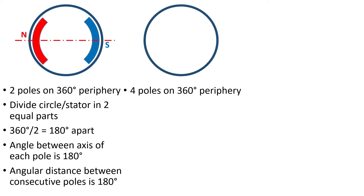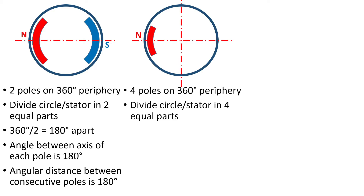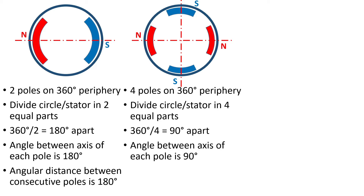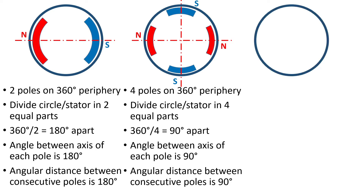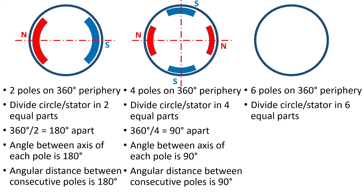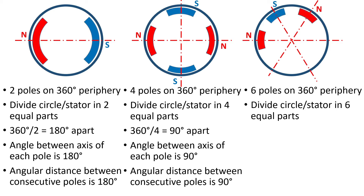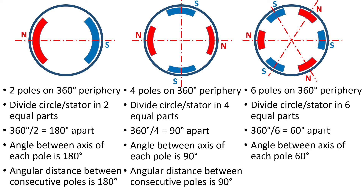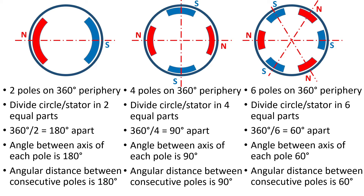If we want to build a machine with four poles, we need to place four poles on a 360-degree periphery, so we divide the cylindrical stator into four equal parts and place poles consecutively: north, south, north, south. Here the poles are 90 degrees apart. If we want to build a machine with six poles, we divide the stator into six equal parts and place the poles alternatively: north, south, north, south, north, south. Here the poles are 60 degrees apart from each other.